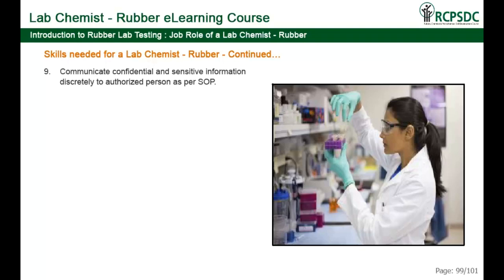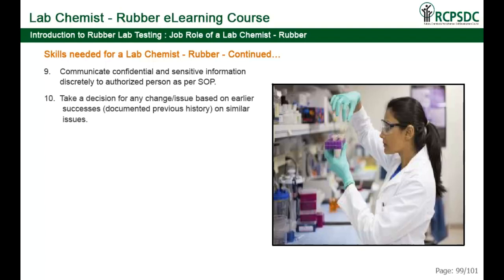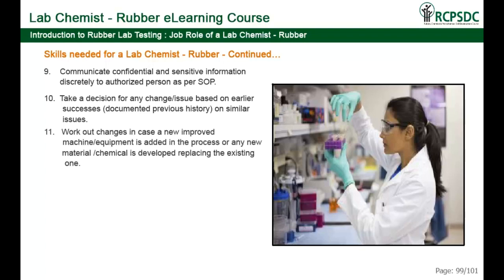Communicate confidential and sensitive information discreetly to authorized persons as per SOP. Take decisions for any change or issue based on earlier successes on similar issues. Work out changes in case a new or improved machine or equipment is added to the process, or any new material or chemical is developed replacing the existing one. Make changes in process cycle time due to improved processes.